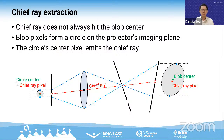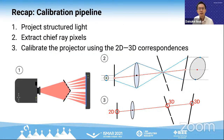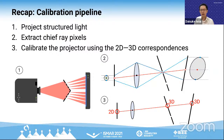The blob center does not correspond to the chief ray pixel. Instead of extracting the chief ray pixel from the blob on the scanner surface, we determine it on the projector's imaging plane. We found that the blob pixels form a true circle on the projector's imaging plane, and its center corresponds to the chief ray pixel. Please refer to the paper for details of the proof.